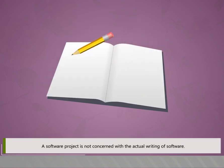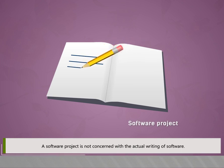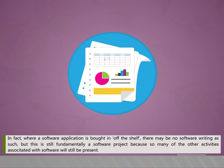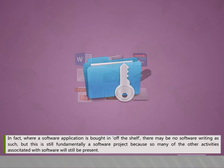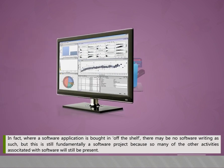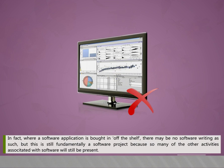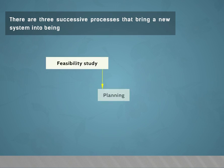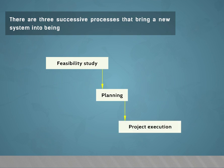A software project is not concerned with the actual writing of software. In fact, where a software application is bought off the shelf there may be no software writing as such, but this is still fundamentally a software project because so many associated activities will still be present. There are three successive processes that bring a new system into being: feasibility study, planning, and project execution.